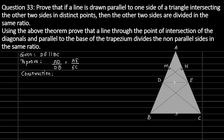To solve this further, we are going to do a construction: we will join CD and BE. We will also make two perpendiculars — DN perpendicular to AE, and EM perpendicular to AD. Let's continue with the proof now.